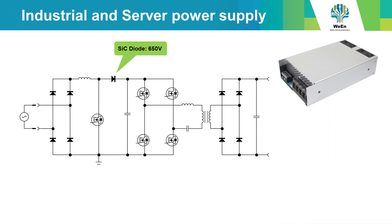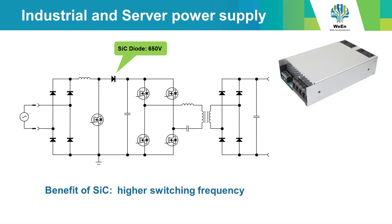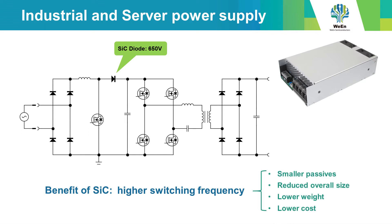Here we see a schematic overview of an industrial or server power supply. The main components are the PFC and the LLC full bridge. The benefit of using silicon carbide components is that faster switching speeds can be achieved, therefore passive components can be smaller, making the whole application smaller, lighter, and lower cost.